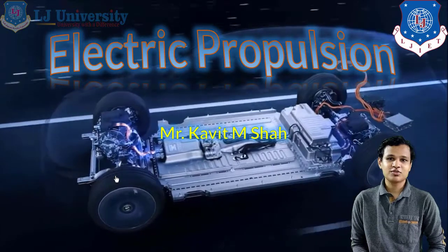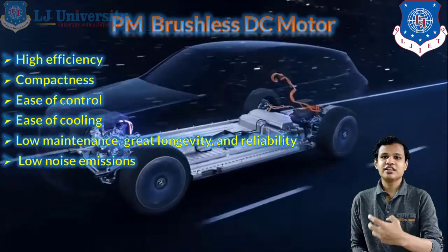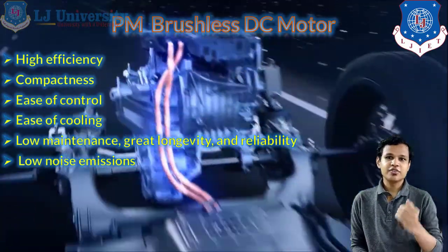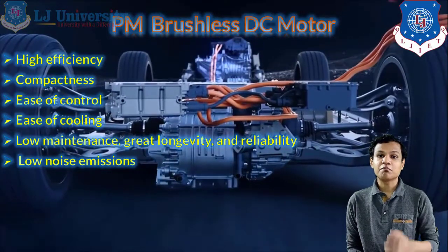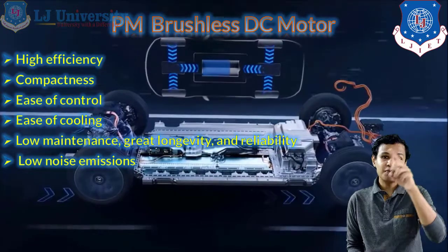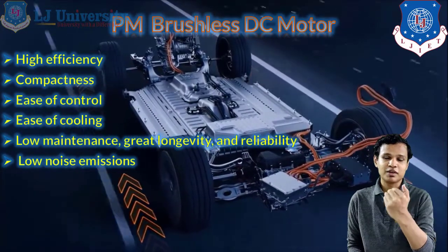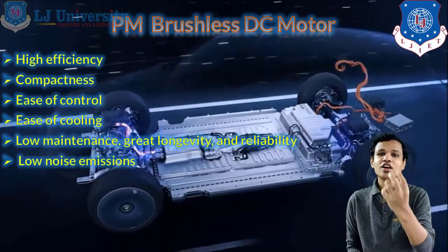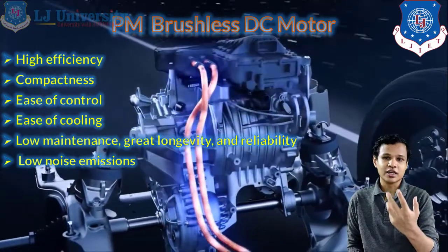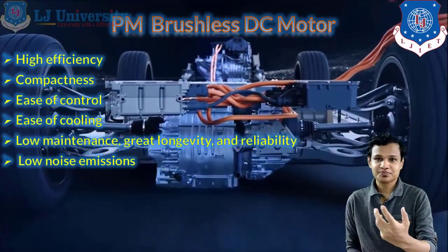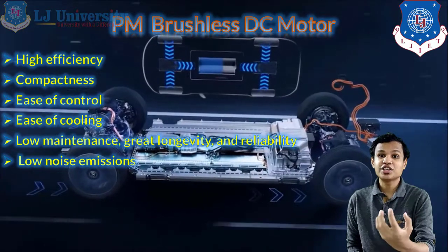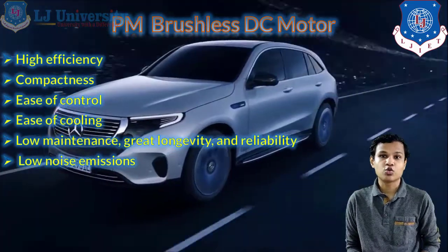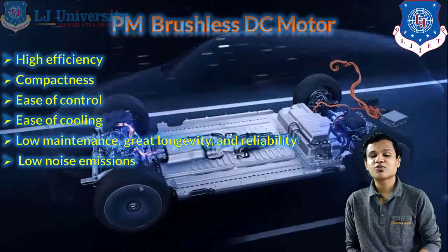The first one is the PM brushless DC motor. It is a type of DC motor in which we use permanent magnets in place of the field winding. As we saw in the DC motor principle, permanent magnets are used around the armature. In this motor we are not using brushes, so friction will not be present inside the DC motor, making it a better option compared to a normal DC motor.